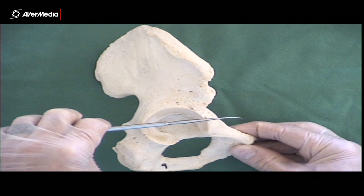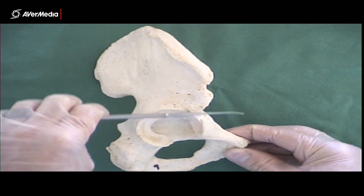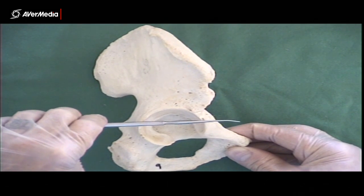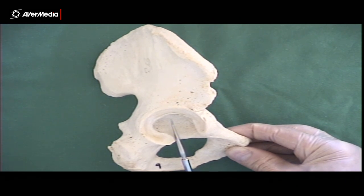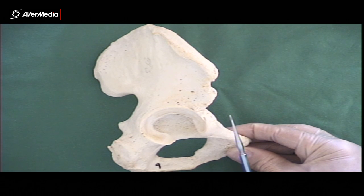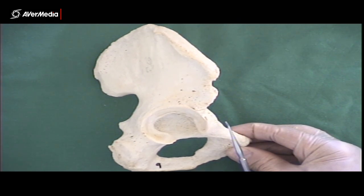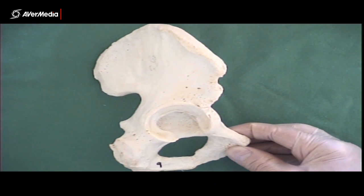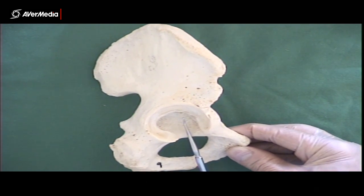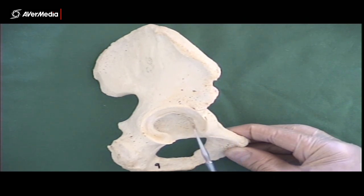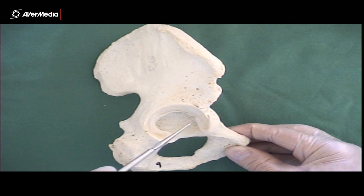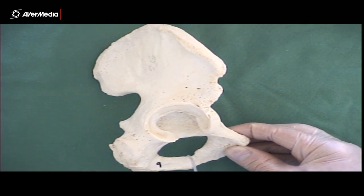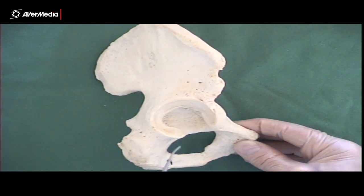If we draw a line across the acetabulum from anterior to posterior, everything above that line is ileum. Then if we draw a line from the bottom up to where that horizontal line was, everything behind this line is ischium. Everything in front of this line — I said that wrong — is the pubis. So the pubis and the ischium are the inferior part of the hip bone, and the ileum is the superior part. The three bones meet here in the acetabulum.